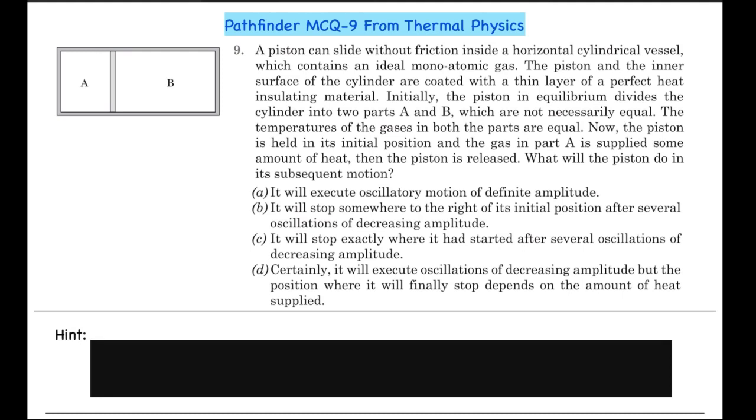There are four options. First, it will execute oscillatory motion of a definite amplitude. Second, it will stop somewhere to the right of its initial position after several oscillations of decreasing amplitude. Third, it will stop exactly where it had started after several oscillations of decreasing amplitude. Fourth, certainly it will execute oscillations of decreasing amplitude, but the position where it will finally stop depends on the amount of heat supplied.